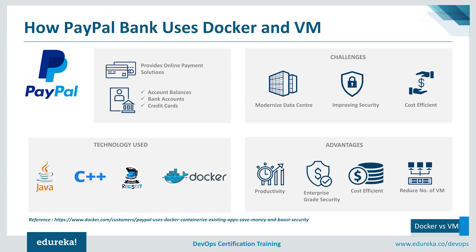PayPal wanted to refactor their existing Java and C++ legacy applications by Dockerizing them and deploying them as containers. This required a technology providing distributed application deployment architecture that could manage workloads and be deployed in both private and public cloud environments. PayPal uses Docker commercial solutions to provide gains for developers in terms of productivity and agility, as well as for infrastructure teams in cost efficiency and enterprise-grade security. The tools used in production include Docker commercially supported engines, Docker Trusted Registry, and Docker Compose. PayPal believes containers and virtual machines can coexist and combines these two technologies.